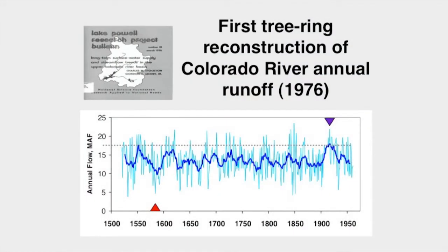In 1976, using computer-aided measurement and statistical techniques, the first formal reconstruction of Colorado River stream flow at Lee's Ferry using tree rings was published. It clearly showed that the early 1900s was in fact the wettest such period of the last 400 years. It also showed that a drought in the late 1500s had lasted for about 20 years and appears to be more severe and sustained than the most recent period since 2000.